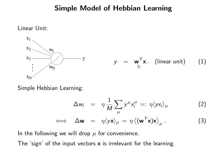A very simple way of formalizing the Hebbian learning postulate is to multiply Y and X. The weight Wi changes according to the product between the output signal and the input signal. If Y and Xi are both large, the weight will grow, consistent with the Hebb postulate. If either is zero, the weight will not change. If Y and X are both negative, W would also increase; if one is negative and the other positive, W would decrease.